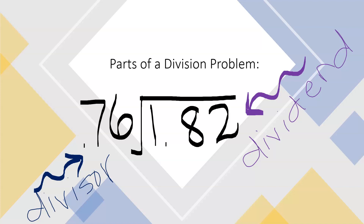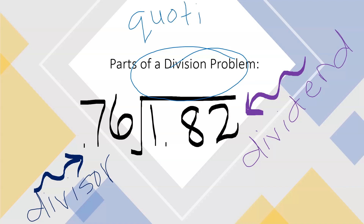The divisor is going to be how much is in each group. So we're splitting the whole into groups, and seventy-six hundredths is how much each group will be worth. To find out how many groups you have, you will divide. When you finish your division problem, you will receive something called the quotient. The quotient is the answer to a division problem and is how many equal groups you can find.